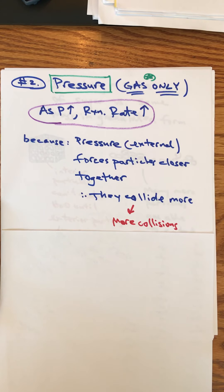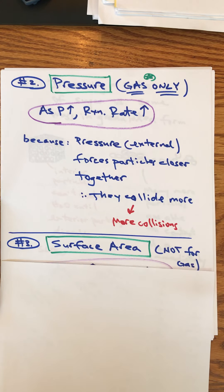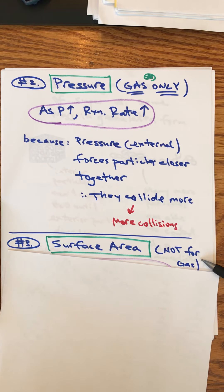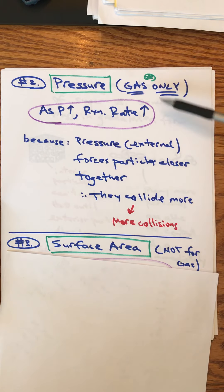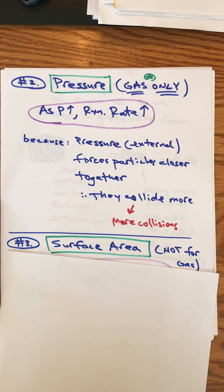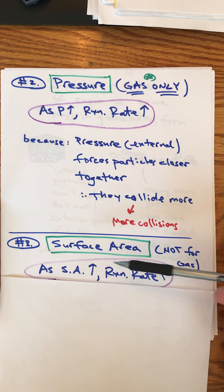Next factor: surface area. Well this would not be for gases. You can't increase the surface area of a gas. The idea of ideal gases is that there's great space in between the particles, every particle is at the surface. So pressure's for gases only, surface area is not for gases.